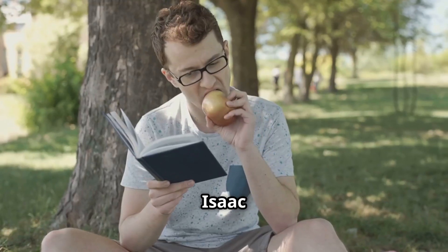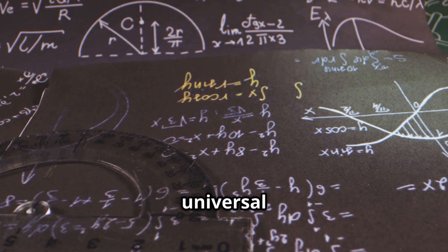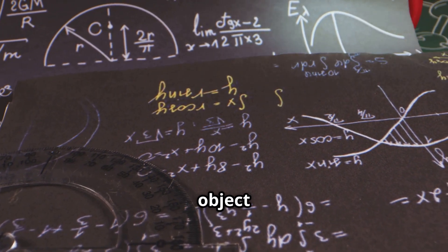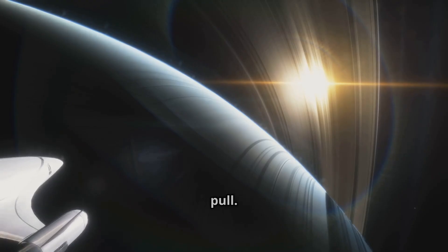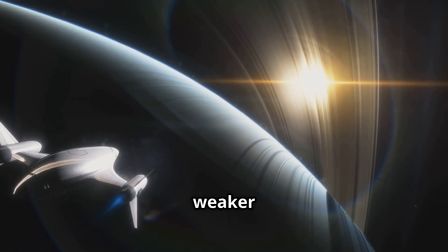For centuries, Isaac Newton gave us our best picture of gravity. His universal law described how every object with mass pulls on every other object. The more mass, the stronger the pull. The farther apart, the weaker it gets.